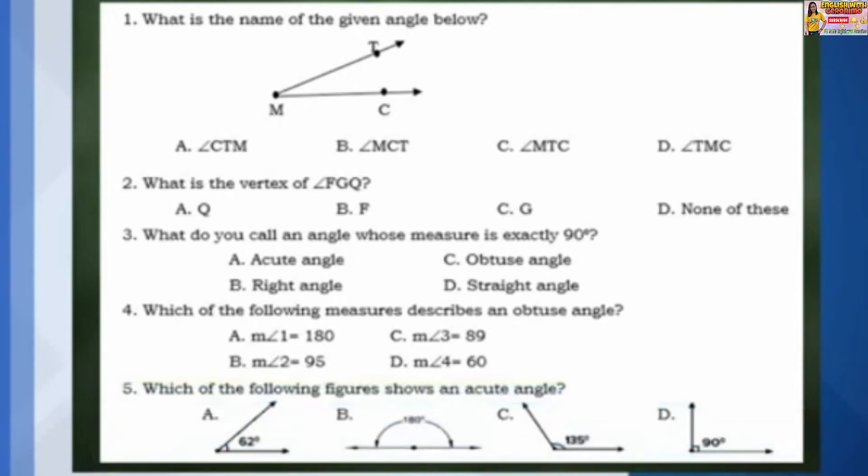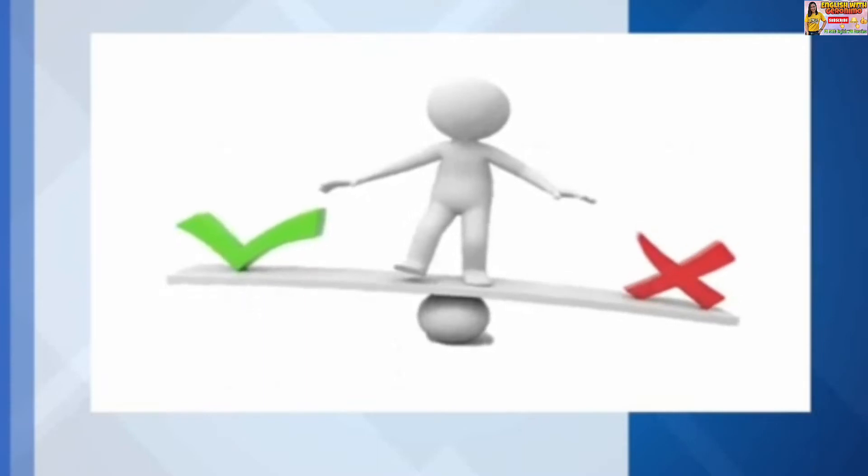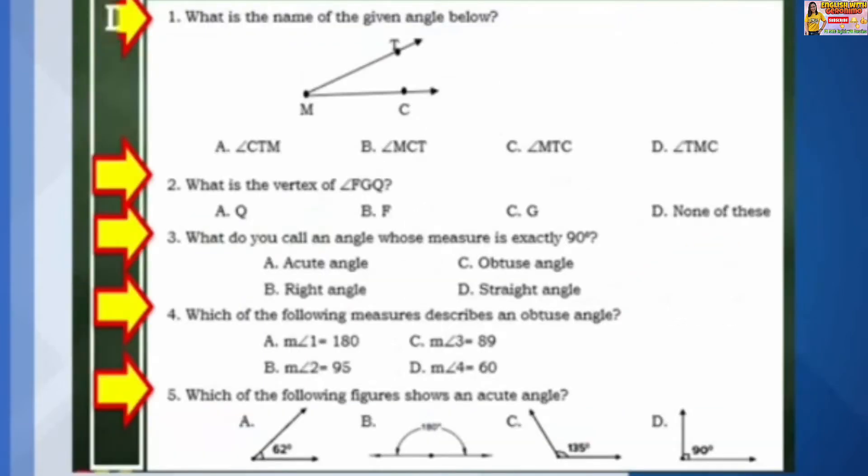And number 5: Which of the following figures shows an acute angle? And now, let's check the answers. Number 1: B. Number 2: C. Number 3: A. Number 4: B. And number 5: A.